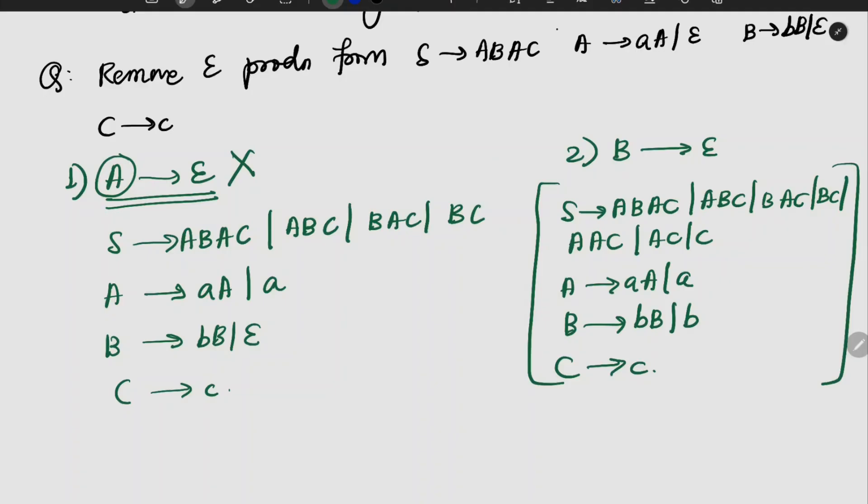The final answer after removing epsilon productions is: S gives a b a c, a b c, b a c, b c, a a c, a c, and c. The rest all will be the same. So this is our final answer.